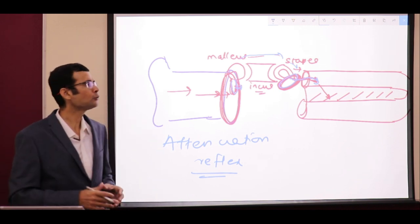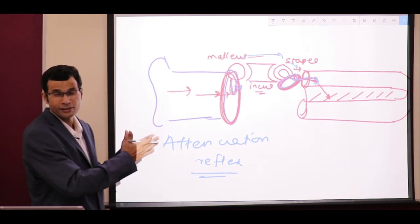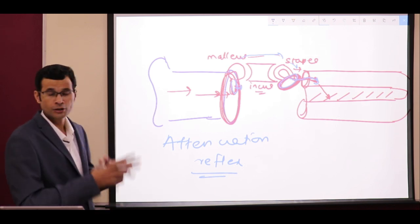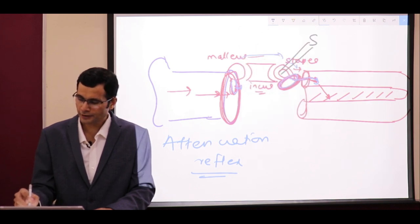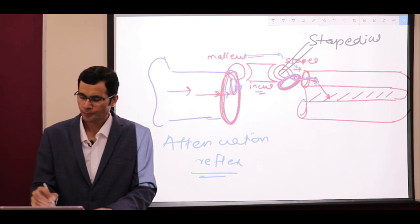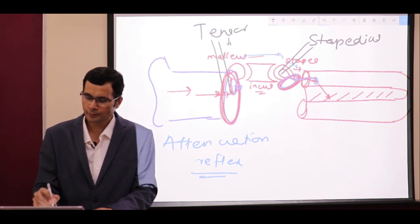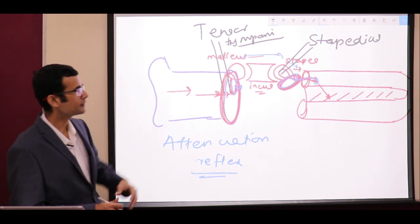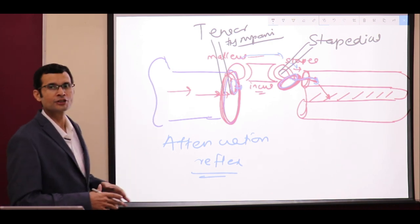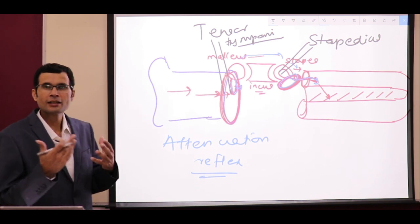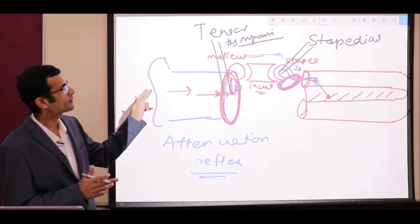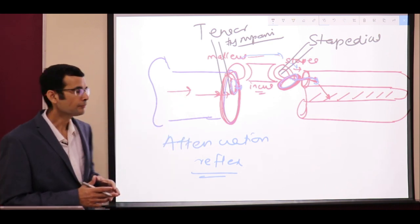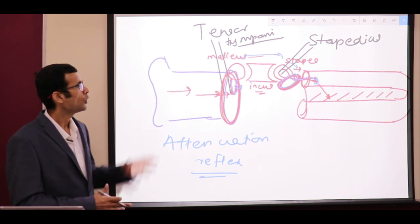Two muscles handle the ossicular chain: the stapedius muscle and the tensor tympani muscle. In the attenuation reflex, when a loud sound enters the ear, there is a reflex contraction of both the tensor tympani and stapedius muscles.